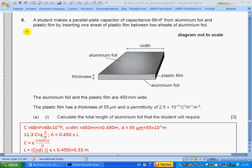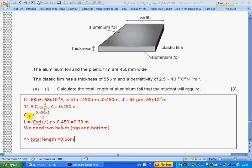Question 8, part a: Student Payne makes a parallel plate capacitor of capacitance 68 nanofarads from aluminum foil and plastic film by inserting one sheet of plastic film between two sheets of aluminum. The aluminum foil and plastic film are 450 millimeters wide. The plastic film has a thickness of 55 micrometers and permittivity given here. Part i: Calculate the total length of aluminum foil that the student will require. We have capacitance in nanofarads—we change into farads. Width we change into meters, and d thickness we change into meters. Section 11.3 gives us formulas for capacitance.